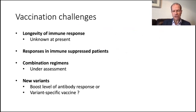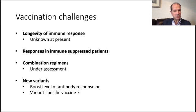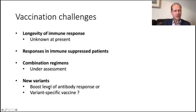We have a number of challenges. We don't know how long the immune response will last after vaccination. We don't know the response in immunosuppressed patients, such as those with a cancer diagnosis. We don't know if we can mix and match the mRNA and adenovirus vaccines — and that's being tested. We need to overcome these variants either by generating very high levels of antibody, or by developing a specific vaccine against the variants.